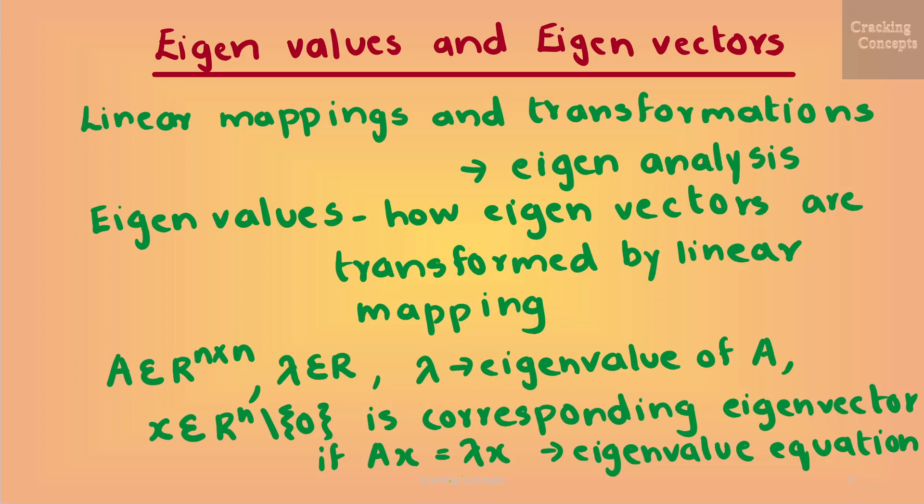Let A be a matrix belonging to the n×n dimensional space, which is the square matrix. Then lambda, which is a real number, is called the eigenvalue of A, and x, which is a vector belonging to the n-dimensional space other than 0, is the corresponding eigenvector of A if Ax = λx. We call this equation the eigenvalue equation.